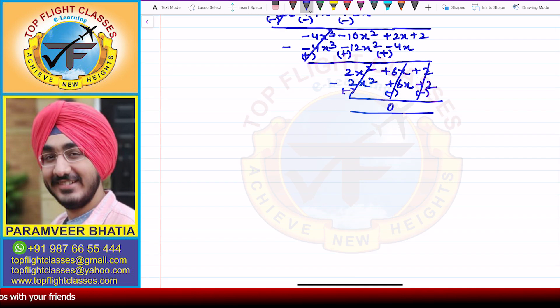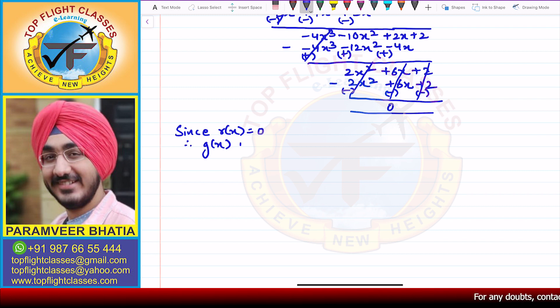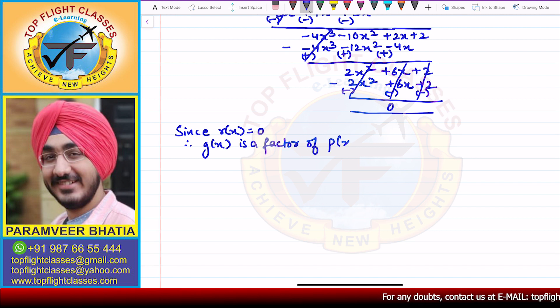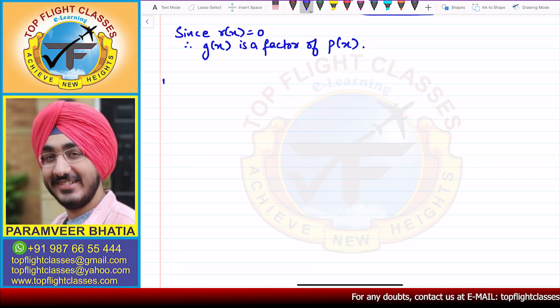Since r = 0, therefore g is a factor of p.